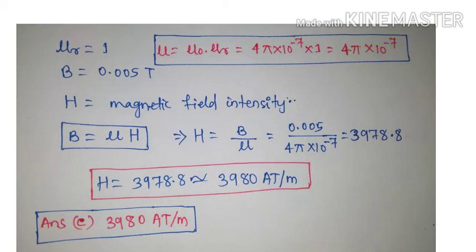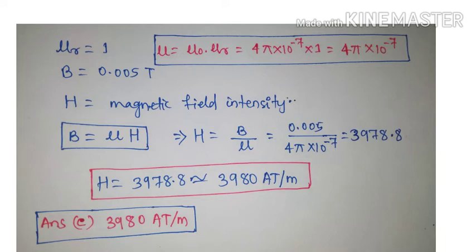Since B equals μH, we get H equals B divided by μ. Substituting: H equals 0.005 divided by (4π into 10 to the power minus 7), which equals approximately 3978.8, rounded to 3980. The correct answer is option C, 3980 ampere-turns per meter.